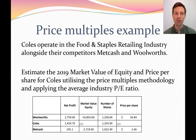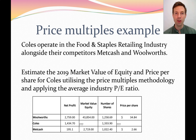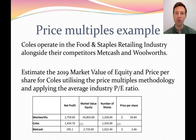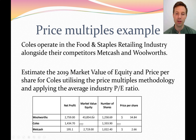Let's look at another demonstration question. Coles is an Australian supermarket company operating in the food and staples retailing industry, and two listed competitors are Metcash and Woolworths. Coles was previously owned by Wesfarmers and in recent years was listed as a separate company. When Coles was first getting listed, price multiples may have been a useful way to estimate its valuation, since Woolworths and Metcash had been listed for many years. So we'd use the average price to earnings ratio of Woolworths and Metcash as an industry average and apply it to Coles.